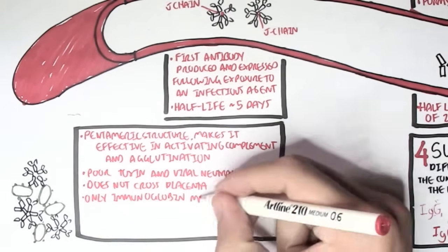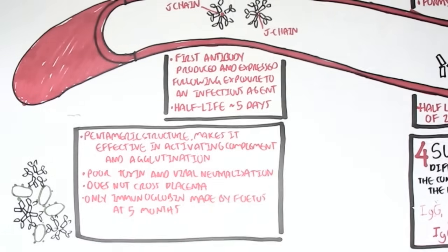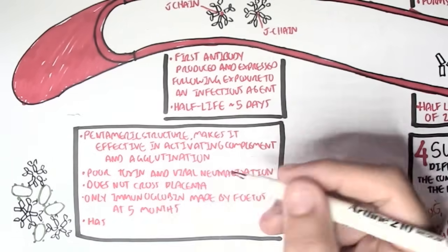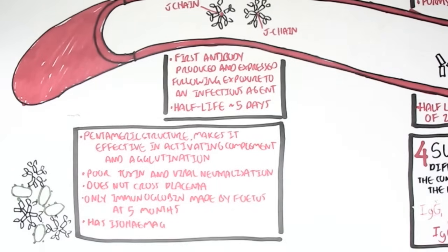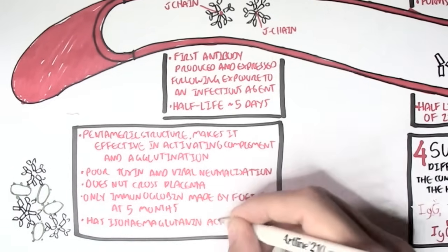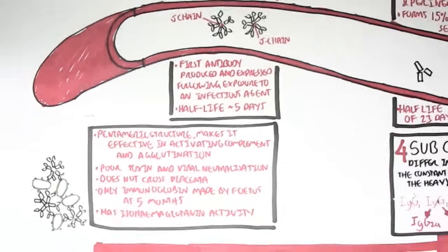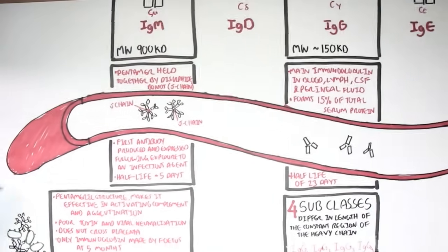IgM is actually the first to be made and the only immunoglobulin made by the fetus at 5 months. IgM also has isohemogglutinin activity, which I will not explain what it is, you just have to research that.